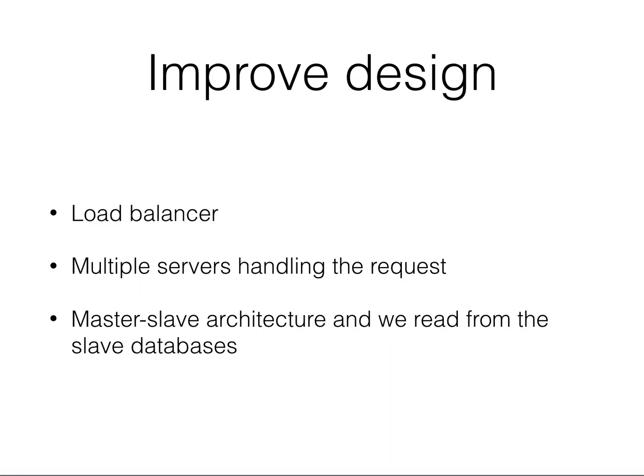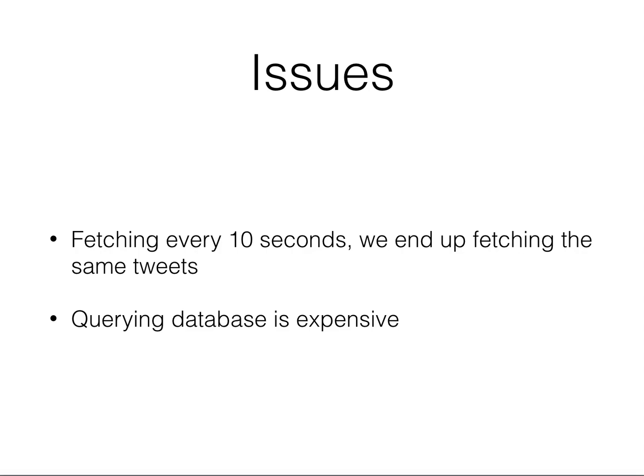Let's improve the design. First, we'll introduce a load balancer and multiple servers to handle requests. For reading from the database, we can have a master-slave architecture where we read from slave databases. A set of servers reads from one slave, a different set reads from a different slave — so it scales horizontally and reduces load on both servers and the database. But there are still some issues: for every 10 seconds you end up fetching the same tweets, and querying a database is expensive.